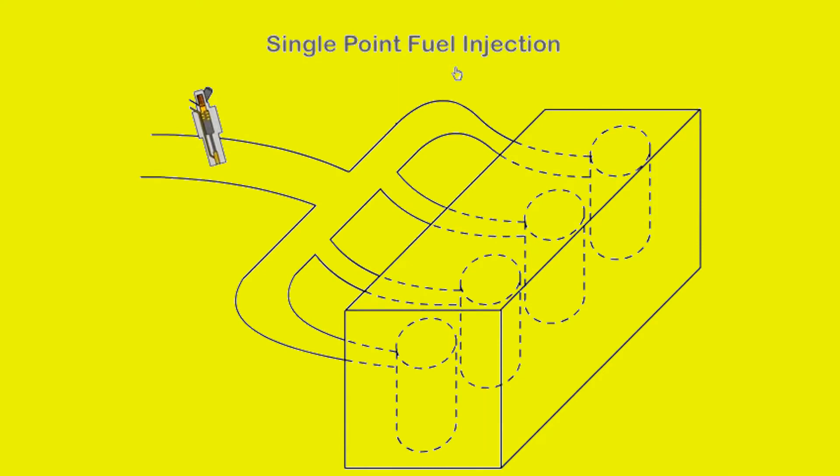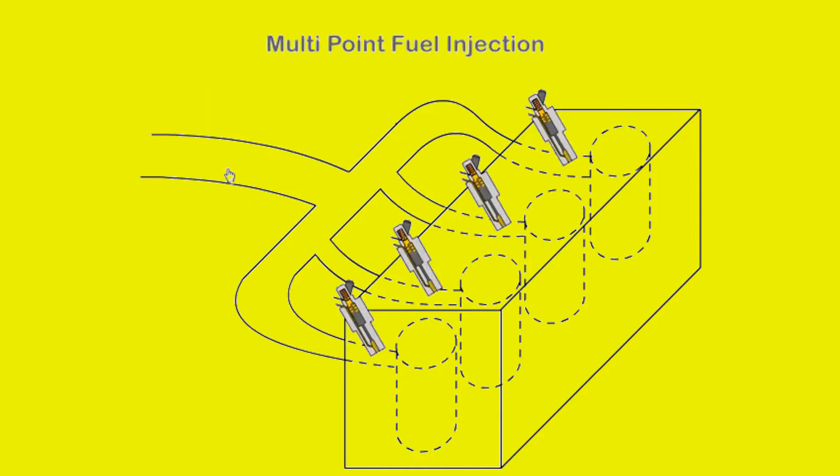There are various layouts for the fuel injector. In a single point, one injector is used for all cylinders. Multi-point, an injector is provided before each inlet valve. Fuel is sprayed as each valve opens. And direct injection, the fuel is injected directly into the cylinder.